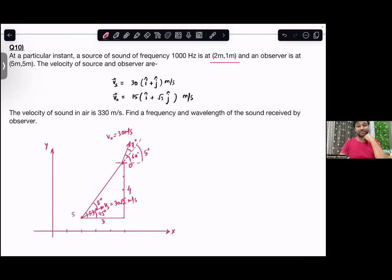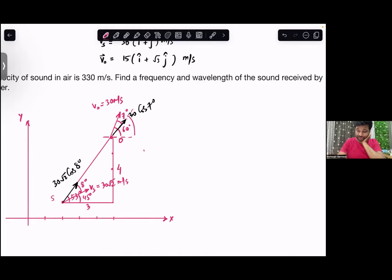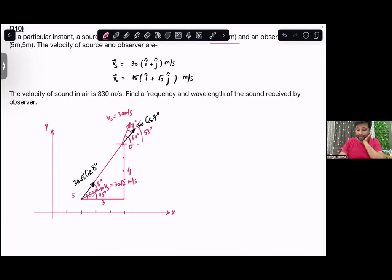Next, find the frequency and wavelength of sound received by the observer. If the motion of source and observer is not along the line connecting them, you need to take the components of velocity of source and observer along the line connecting them and then apply the formula. The velocity of source towards the observer is 30 root 2 into cos of 8 degrees, and this is 30 into cos of 7 degrees.